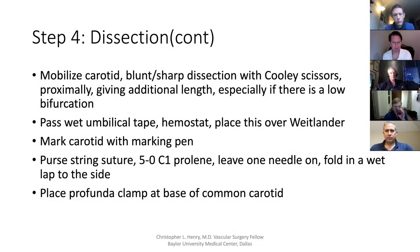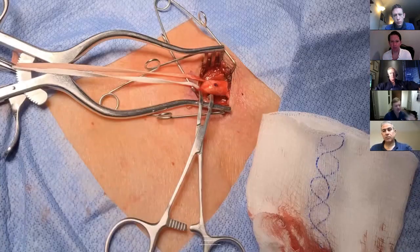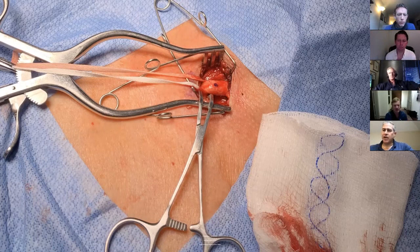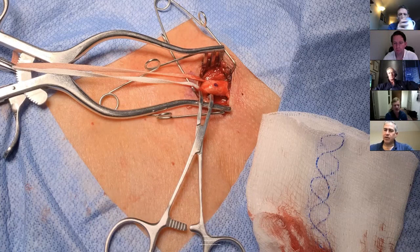For the clamp choice, it just depends on the depth of the carotid, but a lot of times the Profunda clamp works really well. Before placing the 8-French sheath, sometimes pre-dilating with a 6-French dilator makes the 8-French go in more smoothly — especially if it's deep and will be a challenge with the angle. It can sometimes be difficult to introduce that arterial sheath, so once you have your microwire in place, quickly pass a 6-French dilator into the vessel first, then introduce the arterial sheath.